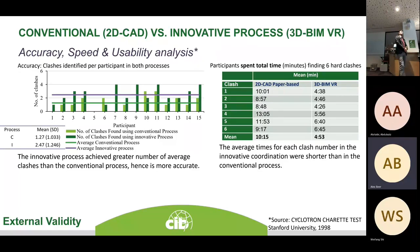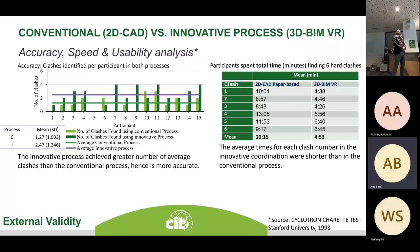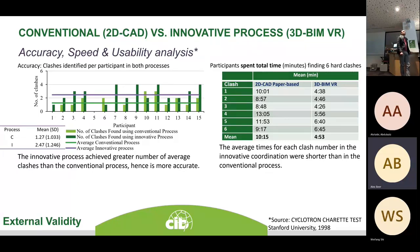Comparing conventional to innovative processes, in the conventional process participants found on average at least one clash. But when put into the VR environment, they found more than two clashes on average — their capability improved. The first hypothesis was confirmed: the innovative process gave participants more opportunity to find clashes compared to the conventional 2D paper-based method.